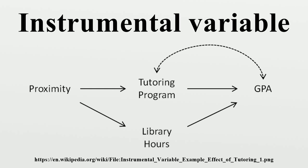Suppose the data are generated by a process of the form where i indexes observations, y_i is the dependent variable, x_i is an independent variable, u_i is an unobserved error term representing all causes of y other than x, and β is an unobserved scalar parameter. The parameter β is the causal effect on y of one unit change in x, holding all other causes constant. The econometric goal is to estimate β. For simplicity, assume the draws of u_i are uncorrelated and homoscedastic — that is, the errors are serially uncorrelated and homoscedastic. Suppose also that a regression model of nominally the same form is proposed.